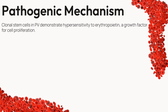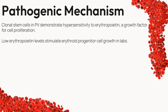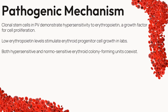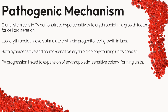Our journey begins with erythropoietin hypersensitivity, a phenomenon where clonal stem cells in PV display an extraordinary response to erythropoietin, a growth factor responsible for cell proliferation. In the laboratory, even low levels of erythropoietin are sufficient to stimulate the growth of erythroid progenitor cells. This heightened sensitivity becomes a key characteristic of PV, and both hypersensitive and normosensitive erythroid colony-forming units coexist, contributing to the complexity of PV's progression.